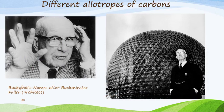Buckminsterfullerene was actually discovered and named after Buckminster Fuller, an architect who built a structure that looked like what you see in this picture on the right-hand side. It is a different allotrope of carbon and quite a complicated one.